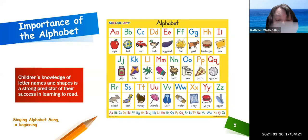The importance of the alphabet: children's knowledge of letter names and shapes is a strong predictor of their success in learning to read. Knowing letter names is strongly related to the child's ability to remember the forms of written words and their ability to treat words as sequences of letters.